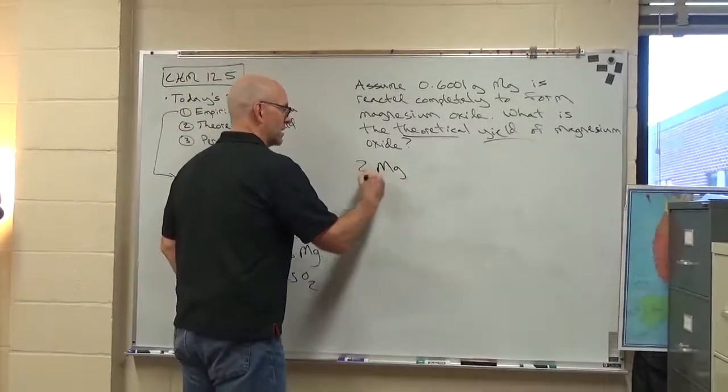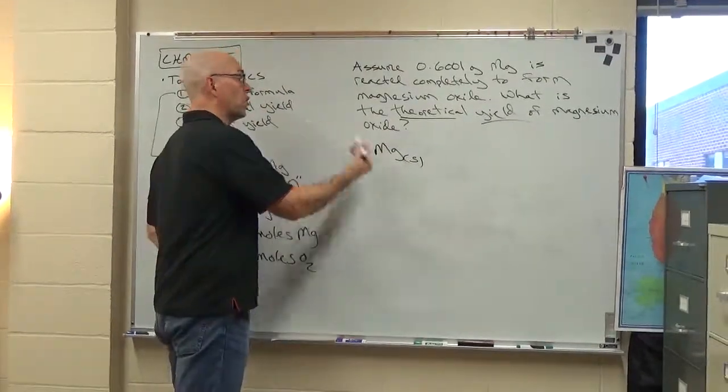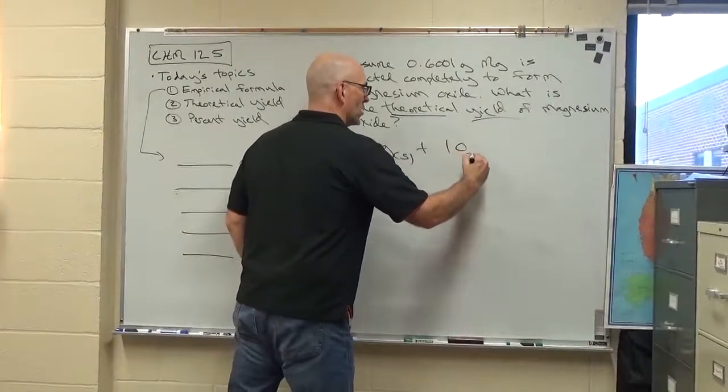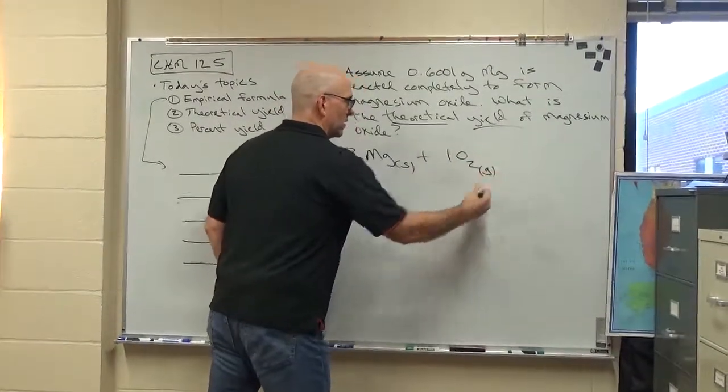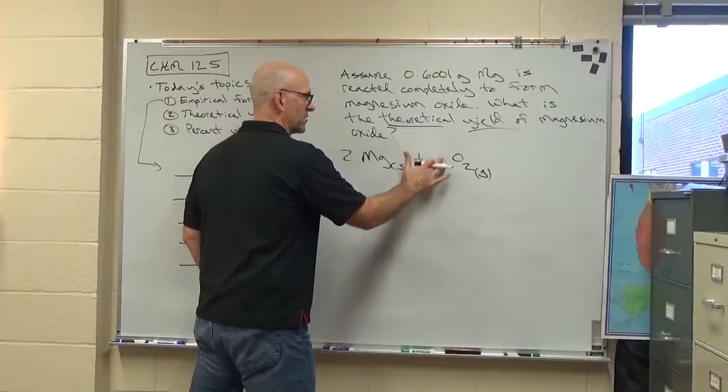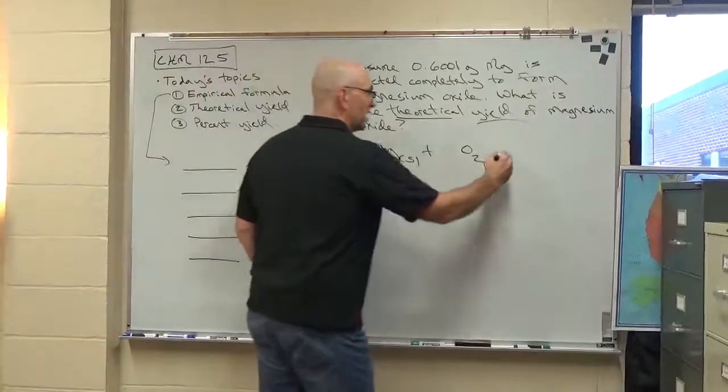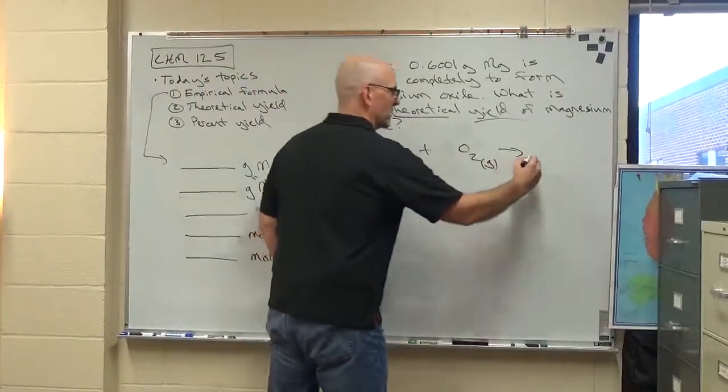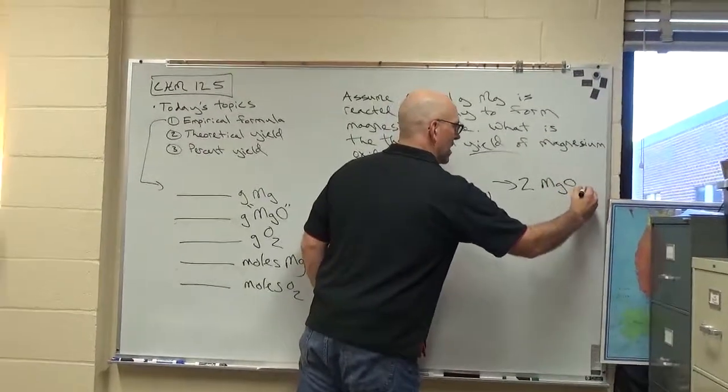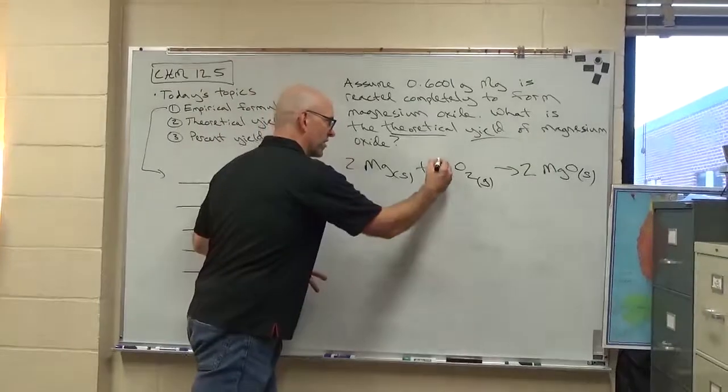It's two magnesium atoms, or two moles of magnesium, react with one mole of oxygen. Usually if the coefficient is one we don't bother to write it. Sometimes it's confusing. To yield, thus theoretical yield, two moles of magnesium oxide. Now remember, the coefficients are mole ratios. So maybe I should put it there for now.